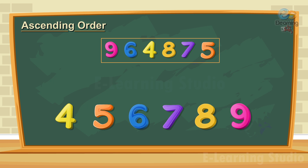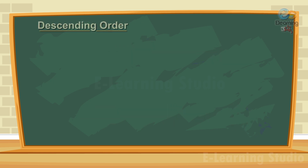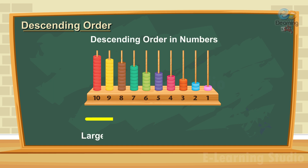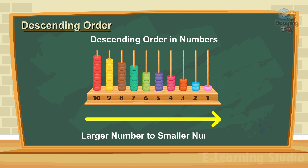We continue until we reach the largest number, which is 9. So the ascending order will be: 4, 5, 6, 7, 8, 9.